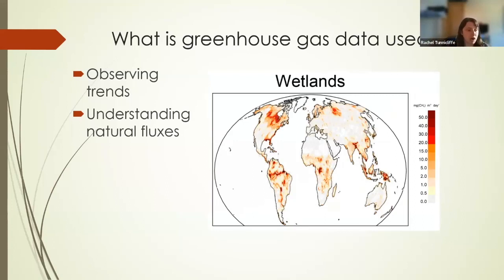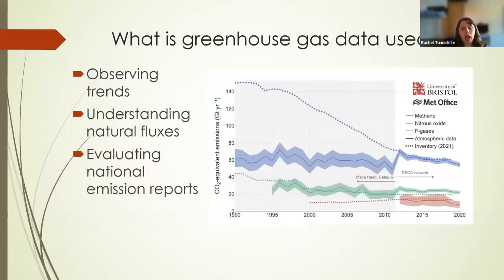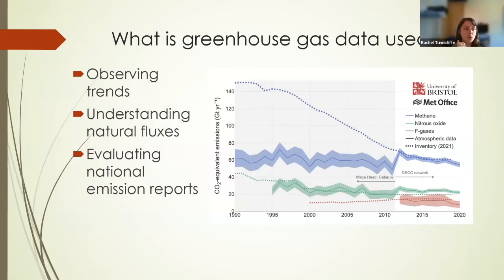We want to use measurements to understand natural fluxes — fluxes that we might be influencing through man-made activities, but also those responding to temperature changes. It's really important to understand the feedback mechanisms involved. We also want to characterize our anthropogenic emissions. There are various methods for this: inventory methods, which tend to be reported to the UNFCCC, but also measurement-based approaches using models, which I'll talk about shortly. Evaluating national emissions reports is a really important application of greenhouse gas measurements.